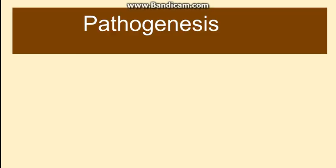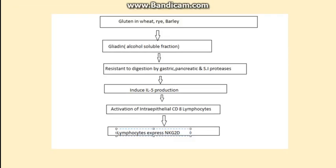We will discuss the pathogenesis first. In a genetically predisposed person, the gluten present in wheat, rye, or barley is broken down into gliadin. Gliadin is the alcohol-soluble fraction of gluten, and it is resistant to digestion by gastric, pancreatic, or small intestinal proteases.